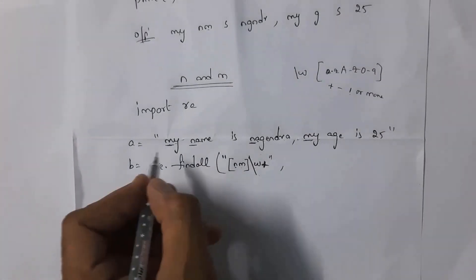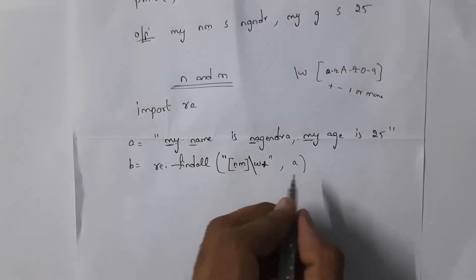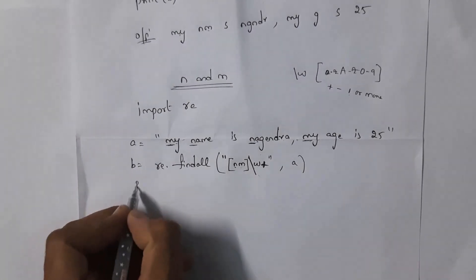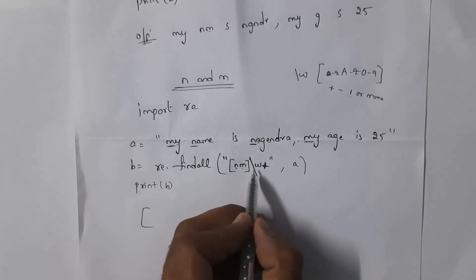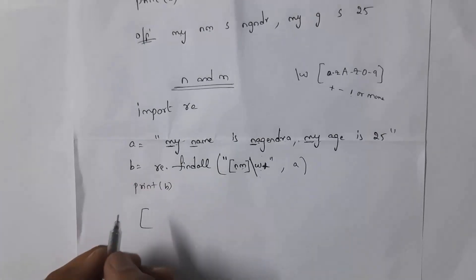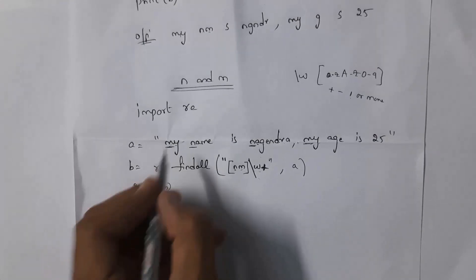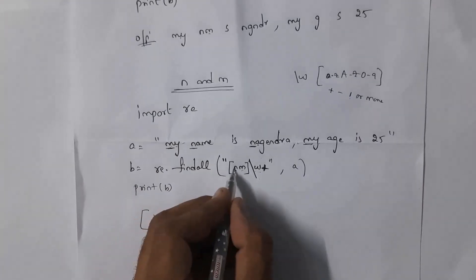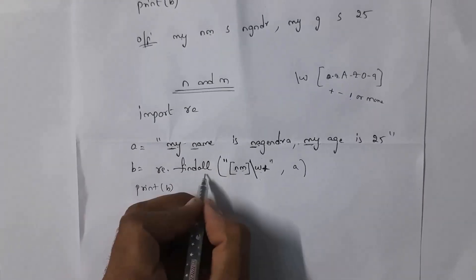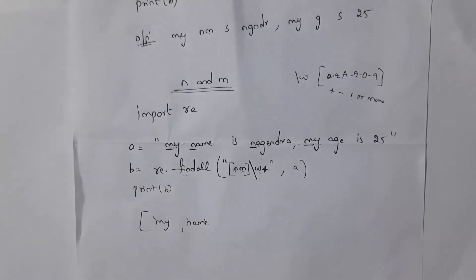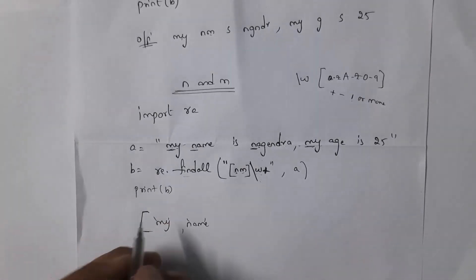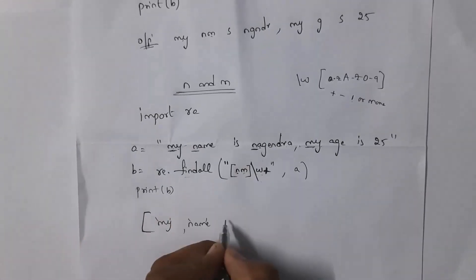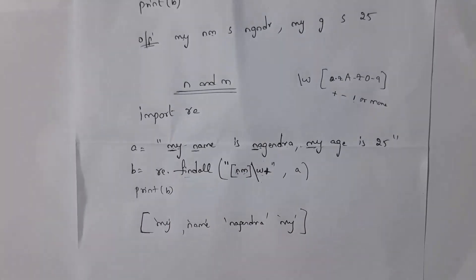The pattern is [nm]\w+. The string is in variable a. When you print b, findall returns the output as a list in square brackets, with each word in quotation marks. The output will be: ['my', 'name', 'nagendra', 'my'] — words starting with either m or n. This is the Python program to print words starting with n and m.